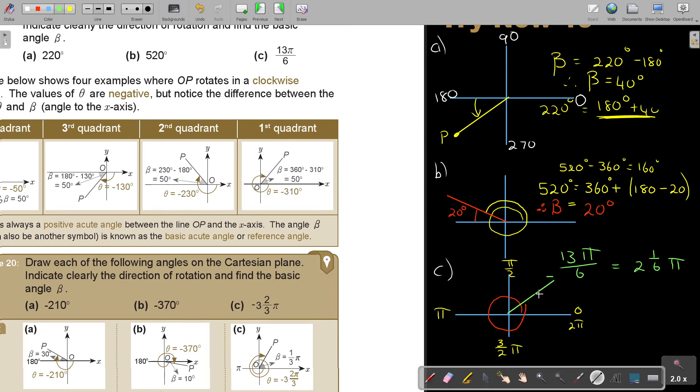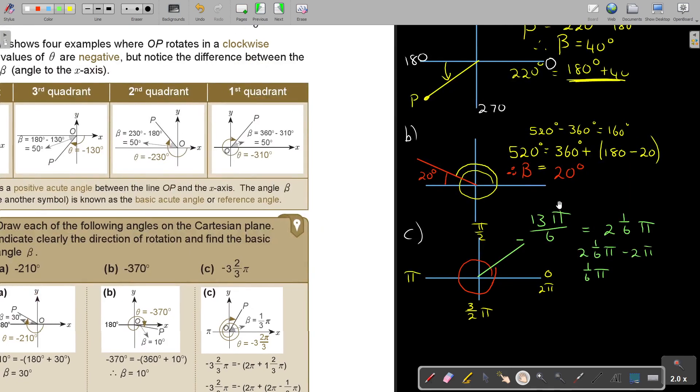Basically, I can still write it here for myself. It's 2, 1 over 6 pi, minus 2 pi. So it's actually that 1 over 6 pi. That's beta. But if I want to write it now in the way which I want you to get used to, I'm going to say 13 over 6 pi will be equal to the 2 pi plus 1 over 6 pi.